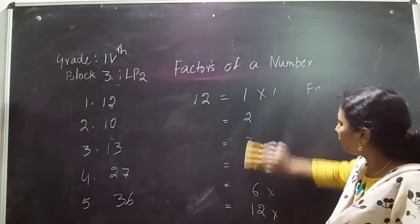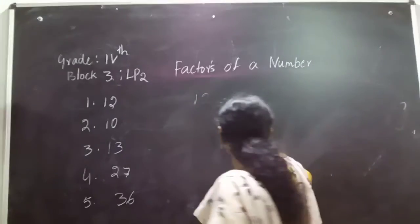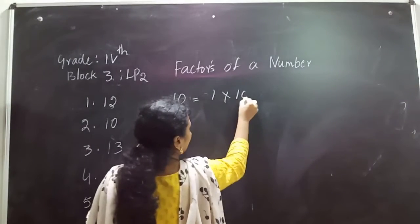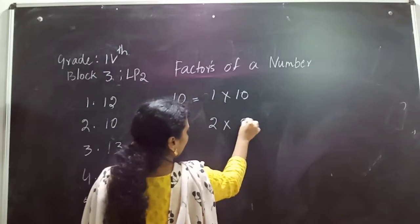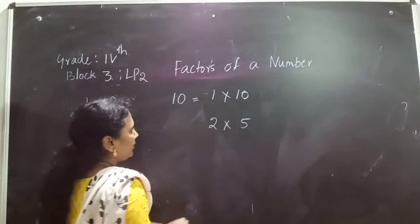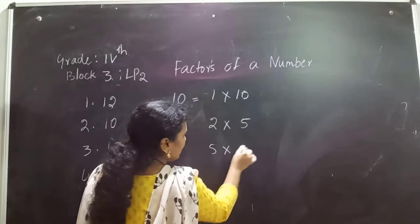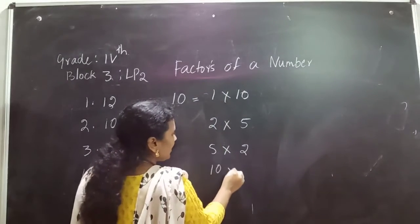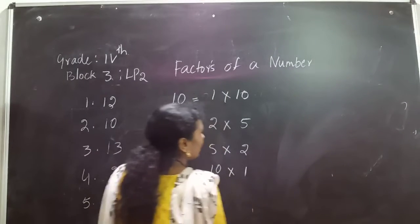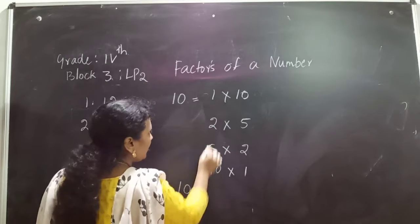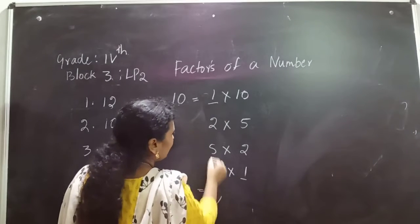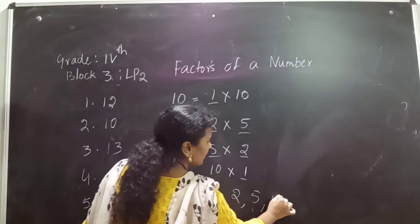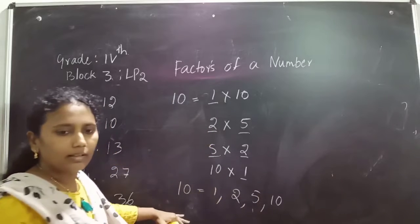We will go for the other number: 10. We will see the factor pairs and factors. 1 times 10 is 10. Then 2 times 5 is 10. 5 times 2 is 10 — already there. And 10 times 1 is 10. These are the factor pairs. The factors of 10 are 1, 2, 5, and 10.